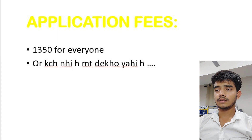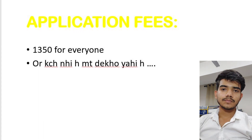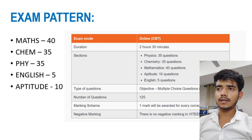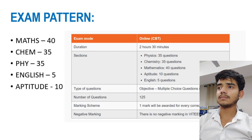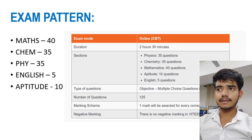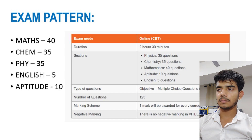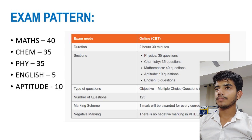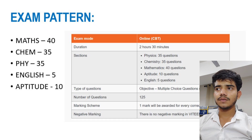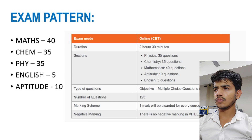There is no fee reduction for any category. The exam is 2.5 hours total, computer based test. The medium is English. There are five sections. Total MCQs are 125 questions for 125 marks — same as SRM JEE. The breakdown is: 40 questions for Mathematics, 35 for Physics, 35 for Chemistry, 5 questions for English, and 10 questions for Aptitude. This is the same for Biology as well.